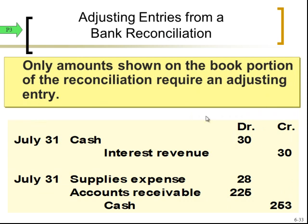The key point here is that when making adjusting entries, the only entries we can make are on our book side. When we have a bank-side adjustment on the reconciliation, our books were already correct, so no journal entry is needed. But when our books are not correct for items reconciled on our side, we do need a journal entry to correct them.